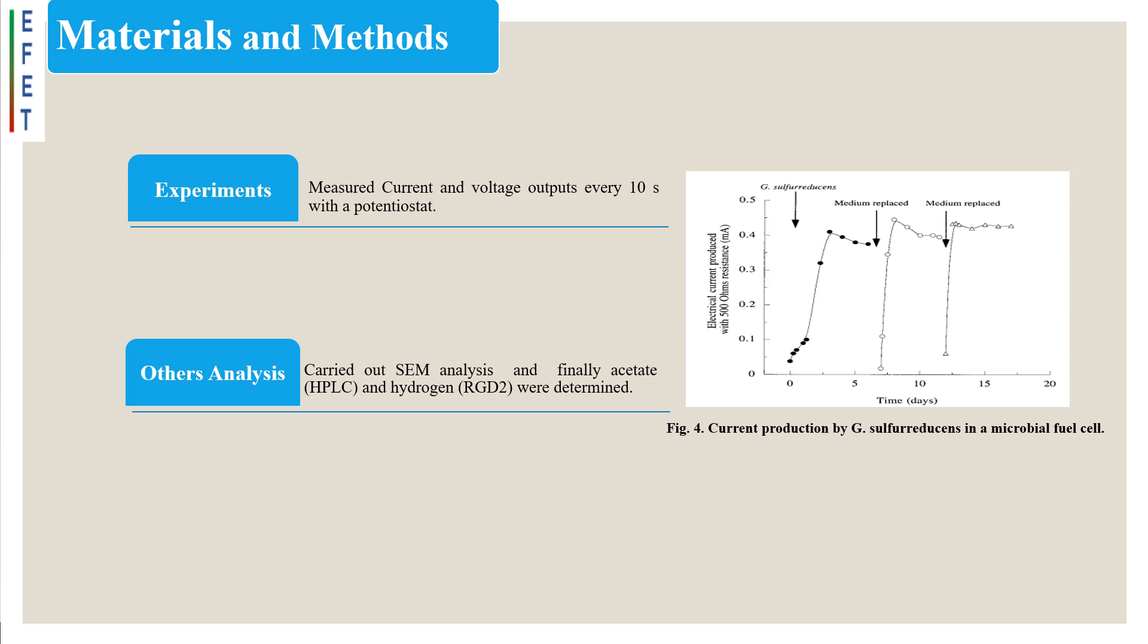Experiments: Measured current and voltage outputs directly from potentiostat every 10 seconds with a PowerLab 4SP unit connected to a Macintosh computer, and data was logged with Chart 4.0 software. Fuel cell power output was monitored by measuring the voltage across a known resistance, 500 ohms, and allowed to equilibrate at open circuit for 2-3 hours until the potential was stabilized.